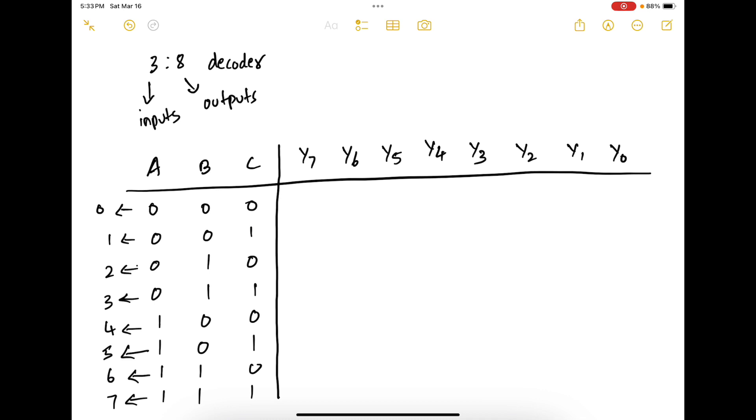So when A, B, C are 0, 0, 0, only line 0 is activated while the other lines are 0. When A, B, C is 0, 0, 1, only line 1 is activated, the other lines are 0s.